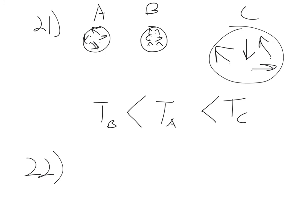Question 22: draw a sample of gas colder than all samples in question 21 and explain why it's colder. The easiest way: draw it the same size as sample B but with even more molecules than B. If you have even more molecules than B in the same size container, they have to be moving even slower than B to maintain the same pressure — so they have to be colder. That's the most obvious way, though there are other valid approaches.